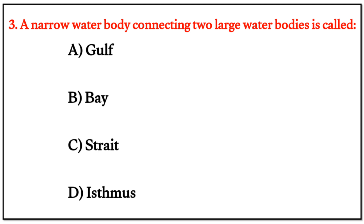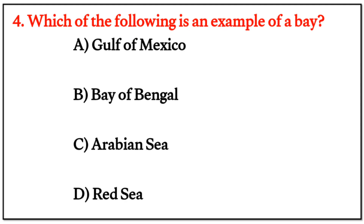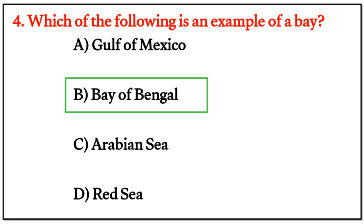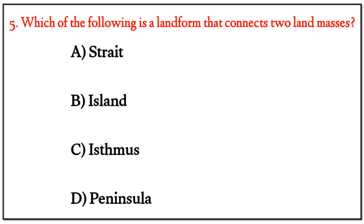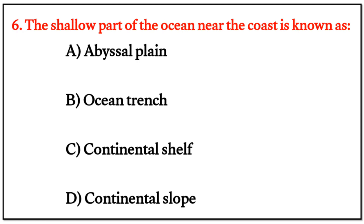MCQ Question 3: A narrow water body connecting two large water bodies is called — the right answer is C. Question 4: Which of the following is an example of a bay? The right answer is B: the Bay of Bengal. Question 5: Which of the following is a landform that connects two land masses? The right answer is C: isthmus.